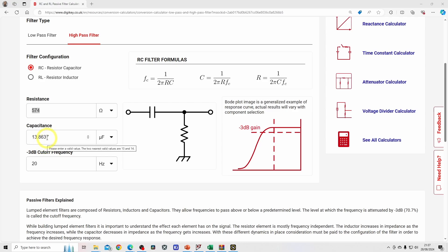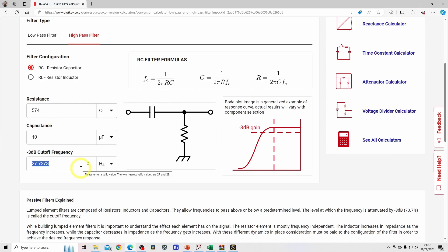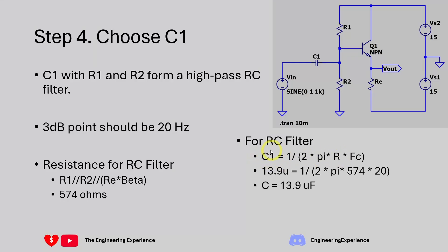13 microfarads might not be available, so you might go for 22 microfarads or the closest available value. If we go for 10 microfarads, the cutoff frequency shifts to 27 Hz rather than 20 Hz. The equation is 1 over 2πRC. Using that formula we get a capacitance value of 13.9 microfarads for C1.